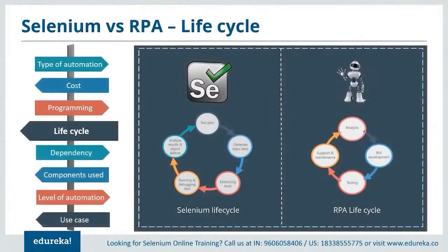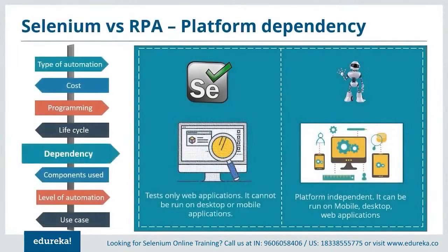Regarding lifecycle: Selenium's lifecycle is more complicated, covering test planning, generating basic test cases, enhancing cases, running and debugging tests, and analyzing and reporting defects. RPA deals with just four processes: analysis, bot development, testing, and support and maintenance. For platform dependency: Selenium can run on different browsers but can only test web applications — no mobile or desktop applications. RPA can run on any platform, whether web, mobile, or desktop applications.